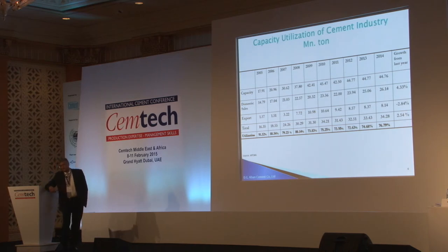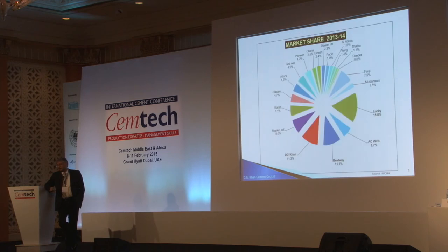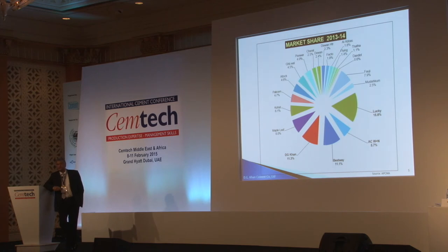Recent sales results indicate that our sale volume has increased by about 6.18% during the past seven months, from July up to January. Our domestic sales have gone up by 10%, which is a very good indicator. We hope domestic sales will pick up further in the coming five months. The market share of DG Khan Cement is close to 11.3%, while another major player holds 6.1%.